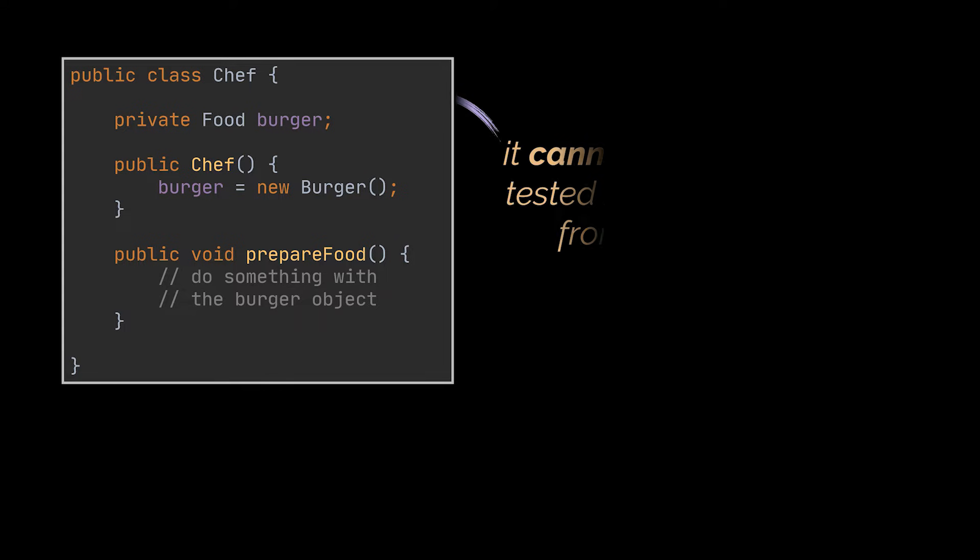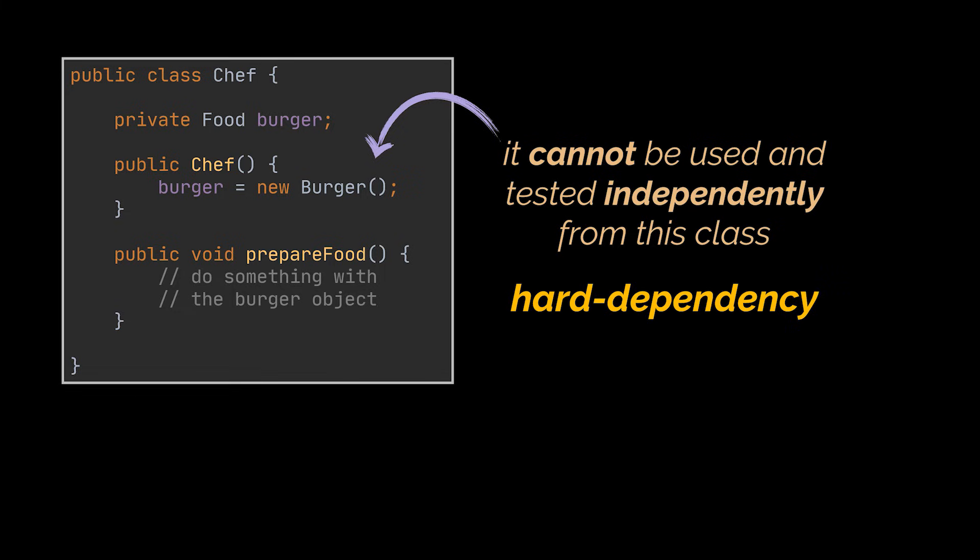Previously when we created a chef class, a food object was being instantiated automatically in its constructor because we needed it. And if a Java class creates an instance of another class via the new operator, it cannot be used and tested independently from this class. It becomes tied to this class and open for modification, and this is called a hard dependency.